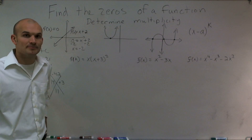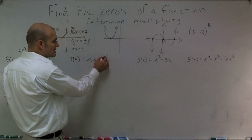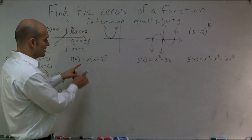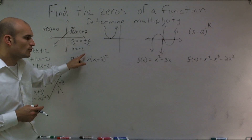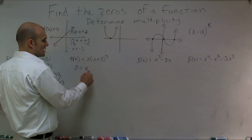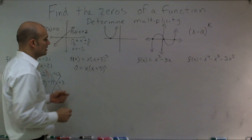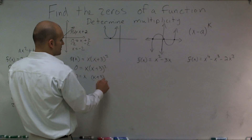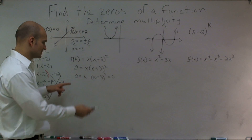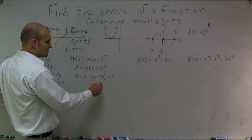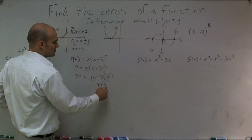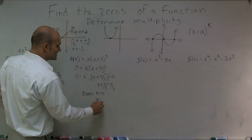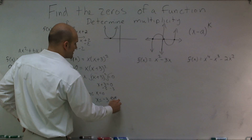For the next problem, these are already in factored form. Since this is a factor raised to an even exponent, this is going to have a multiplicity of 2, or an even multiplicity. And this is going to be an odd multiplicity. I'll set f of x equals 0: x times x plus 3 squared equals 0. Setting both factors equal to 0, I have x equals 0, and taking the root of both sides of x plus 3 squared equals 0, I get x equals negative 3 with an even multiplicity.